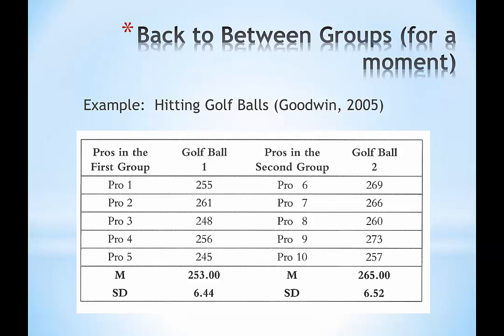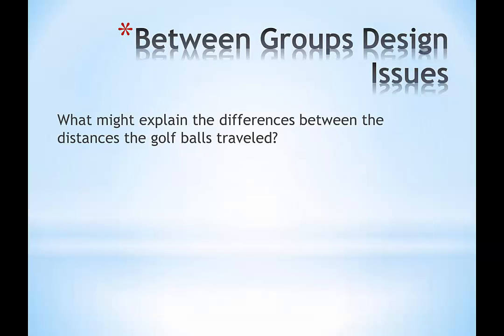But as researchers and experimenters, we're always thinking about conclusions and potential alternative explanations. As we get into that, I hope you'll see the intuitive, natural advantage of a within-groups design. We may have to think about what are the possible explanations that might help us understand why golf ball two was hit further—traveled a greater distance, to be technical—than golf ball one.